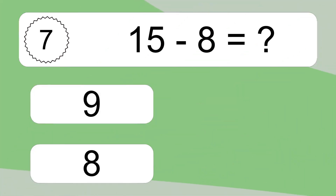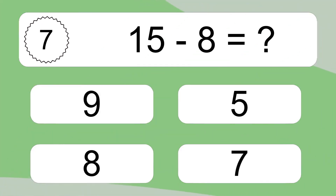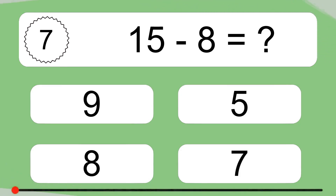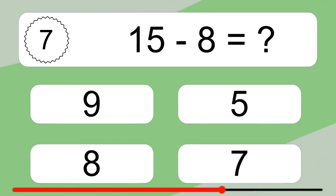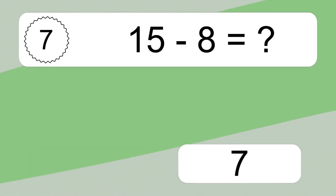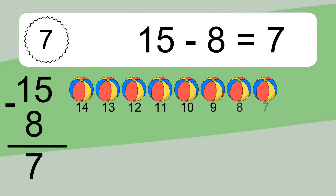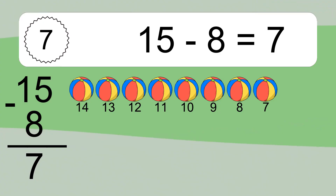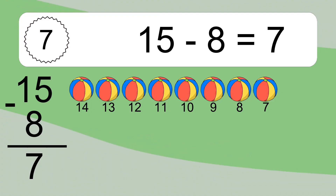15 minus 8 equals what? 15 minus 8 equals 7. Let's count it: 14, 13, 12, 11, 10, 9, 8, 7.